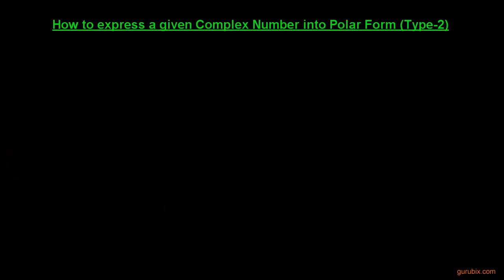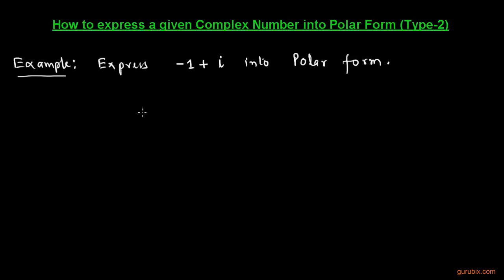Welcome viewers. In this video we shall learn how to write or express a given complex number into polar form. Let us take an example to understand this topic. The example is: express minus 1 plus iota into polar form. Let us solve this example so that we can understand the topic.